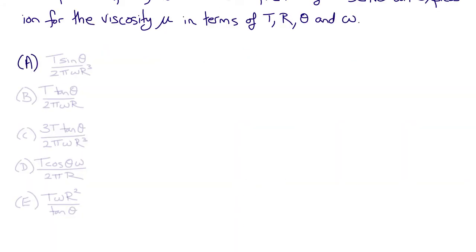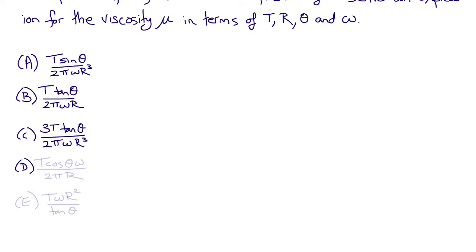What was your solution? Was it: (a) T sin theta over 2 pi omega R cubed, (b) T tan theta over 2 pi omega R, (c) 3T tan theta over 2 pi omega R cubed, (d) T cos theta times omega over 2 pi R, or (e) T omega R squared over tan theta?